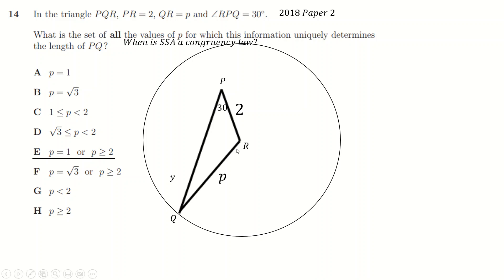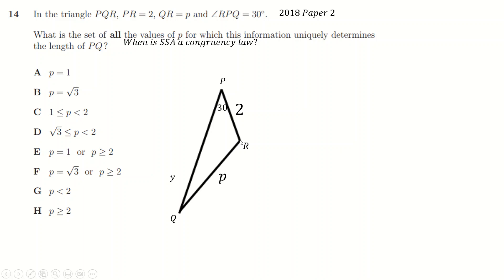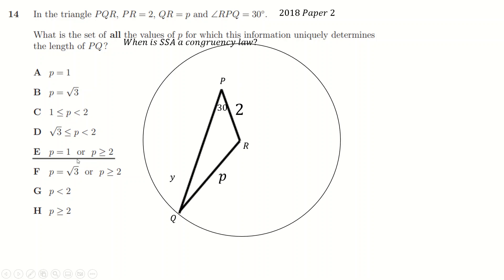When P equals 2 as well, because otherwise the other place you could draw it would be just straight up to reach this point. So the two rules are: P equals 1, or P is greater than or equal to 2. If you didn't quite follow that, please watch the video on Triangle Congruency where I talk about this much more. It's a good video, so do watch it if you're interested.